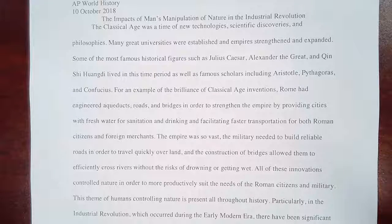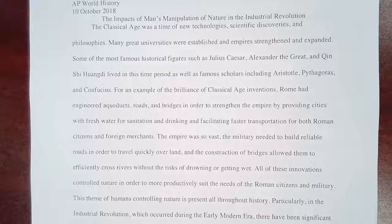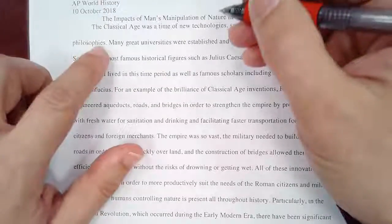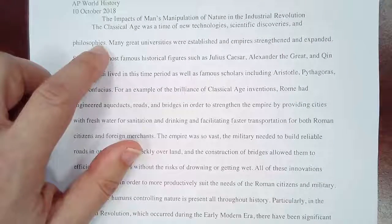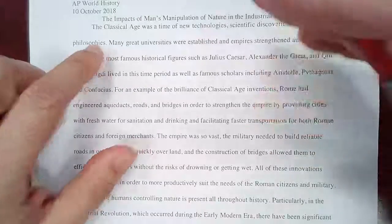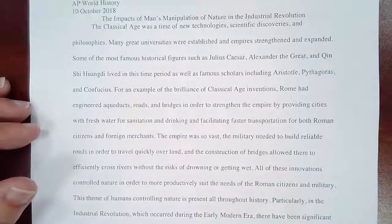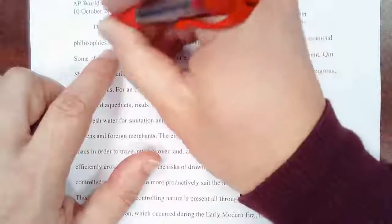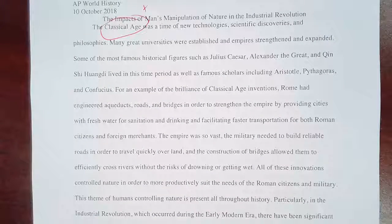Just keep in mind: contextualization is anything that comes before the time period in the question. You need to have three specific issues, and it needs to be relevant to what you are talking about. In this particular example, the essay starts off with the classical age. Remember that this particular question was about the transition from the post-classical age into the modern age, as far as our ability to manipulate nature. So the classical age does come before — this is A+.